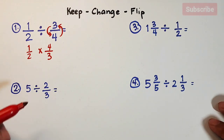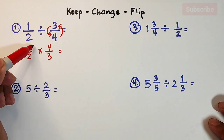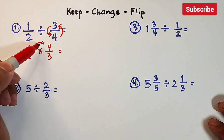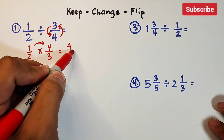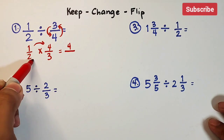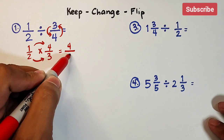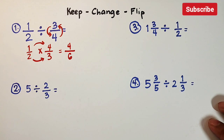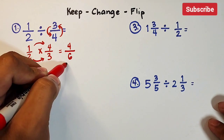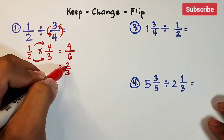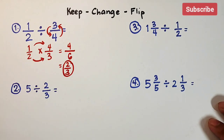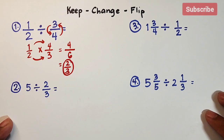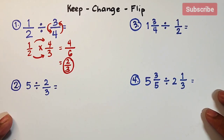Now perform the multiplication: 1 times 4 is 4, over 2 times 3 which equals 6, giving us 4 over 6. We can still simplify 4 over 6, and it becomes 2 over 3. This is the final answer for item number 1.